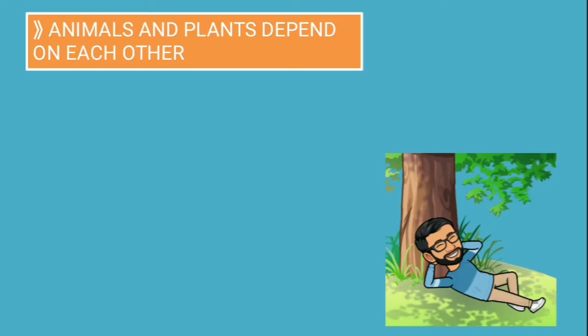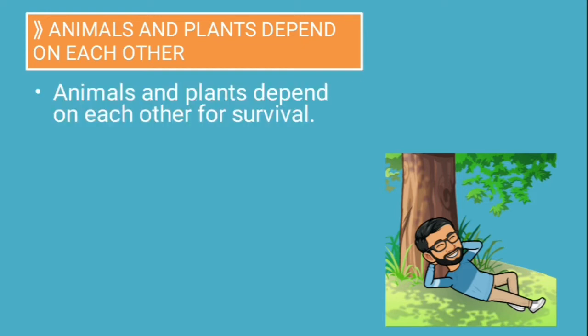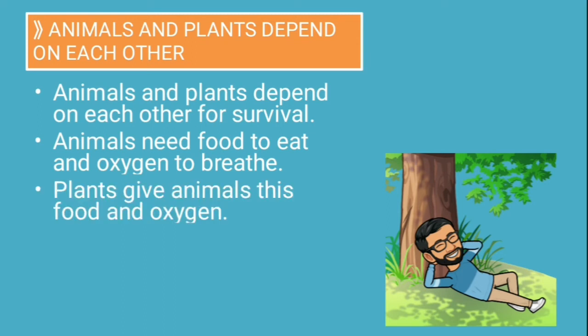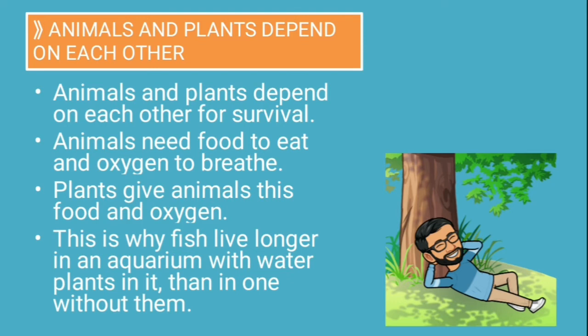Talking about animals and plants, the way they are dependent on each other. Animals and plants depend on each other for everything, for survival also. Animals need food to eat and oxygen to breathe, and plants give animals this food and oxygen.